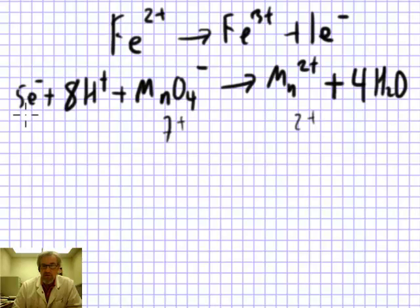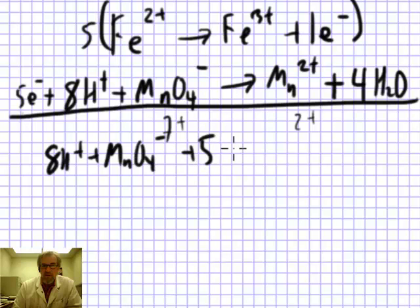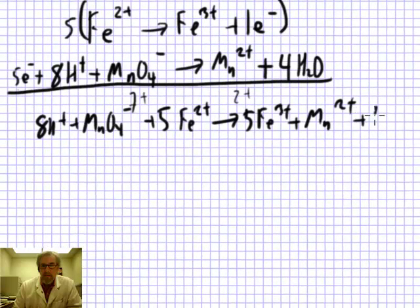When I sum this up to get my overall reaction, I can't just add these together because I'm losing fewer electrons than I'm gaining. So I have to multiply the top reaction by five to make sure there are five electrons gained and lost. So here's the overall reaction. Eight H+, plus MnO4-, plus five Fe2+, makes five Fe3+, plus Mn2+, plus four water. That's the overall reaction here.